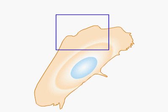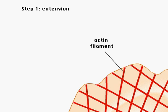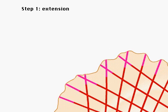Cell crawling takes place in four stages. In the extension stage, the cell pushes the lamellopod forward. This movement is driven by rapid polymerization of actin filaments at the leading edge of the cell membrane.